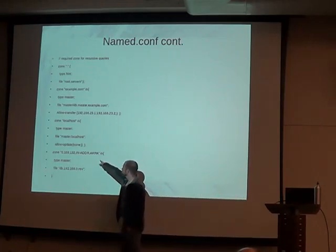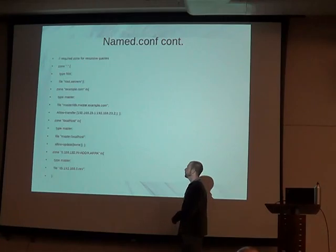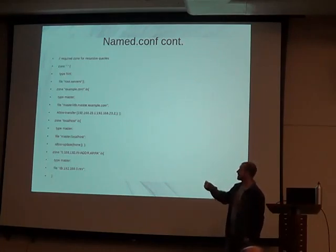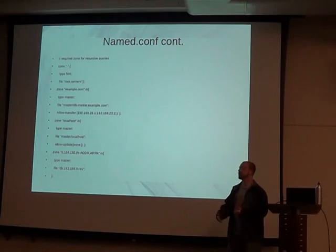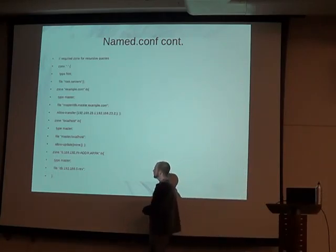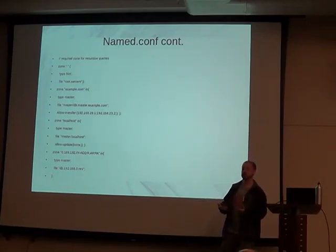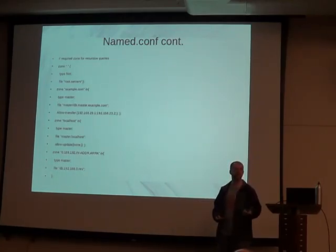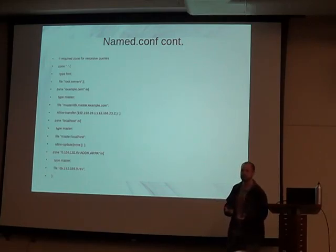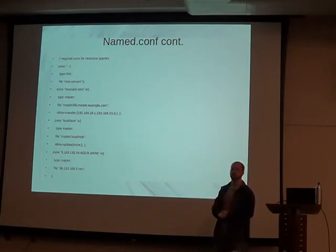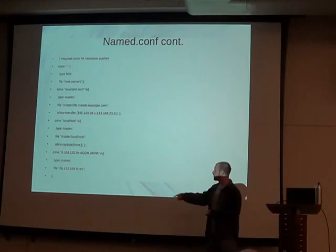The next zone is 0.168.192 — the reverse lookup zone. For example.com sitting in the 192.168.0 network, that will be the reverse lookup for it. The entry is in reverse order. If you're on a 192.168 network, you can drop the .0 to make it larger and take up the whole 192.168 network. In this case the type is 'master' and we list our file at the bottom.